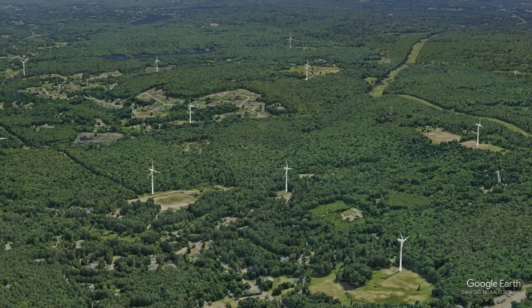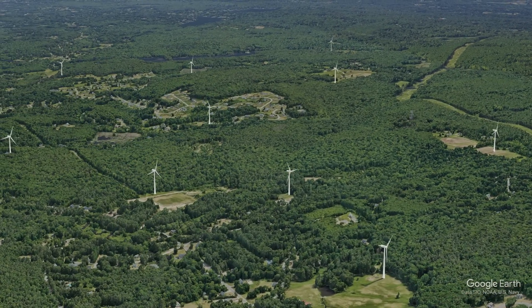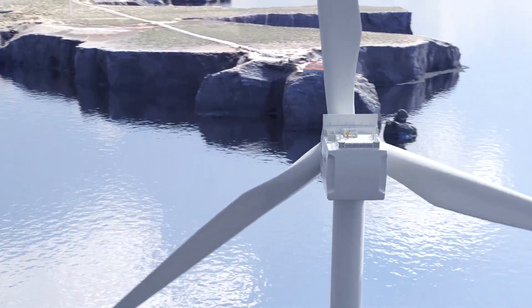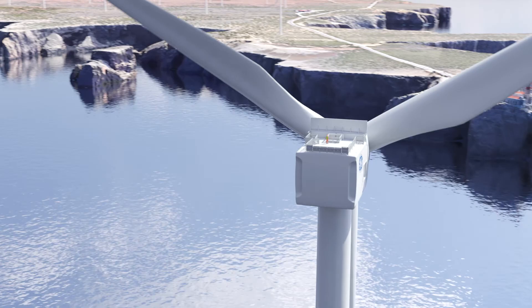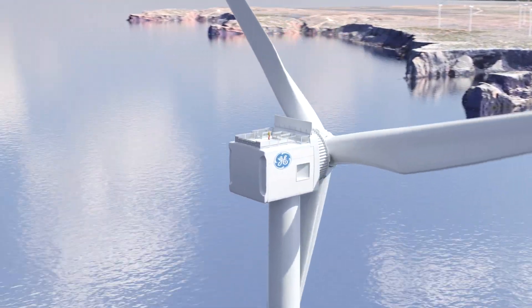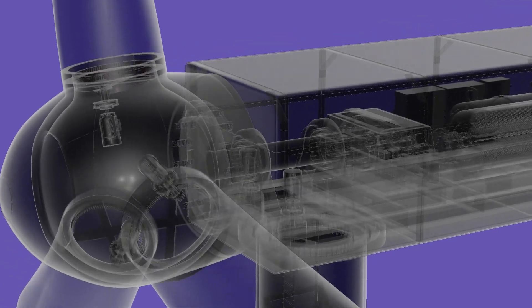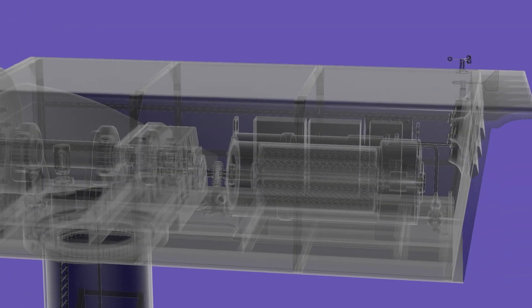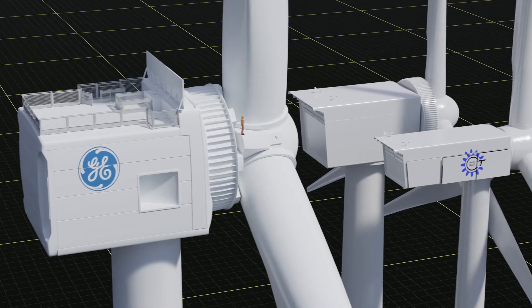Global warming and the finite amount of fossil fuels are forcing humanity to think more and more about renewable energy sources. In this video you will see how people use one source of renewable energy: wind. We will look at where wind turbines are installed, what types of turbines there are, and how they are arranged inside.